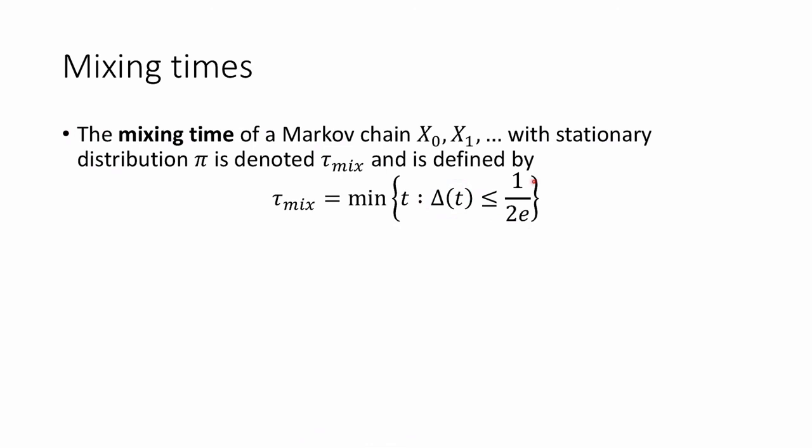You might be wondering, what is with this 1 over 2e? Well, it's a little bit arbitrary. The reason why it's okay to have a somewhat arbitrary limit here is the following fact.